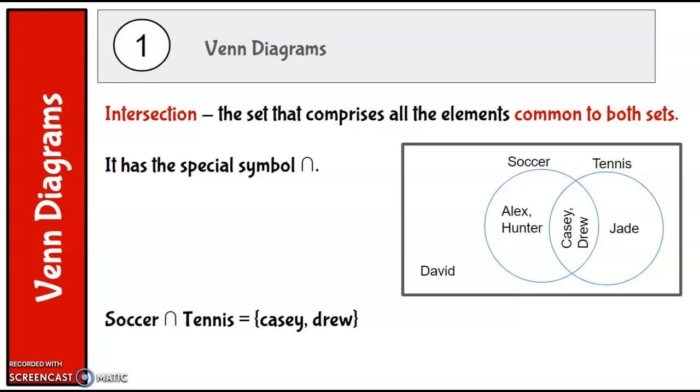So the intersection of soccer and tennis is Casey and Drew, because those two people play both soccer and tennis. And you can see that from the overlap of these two circles. This whole circle is soccer and this whole circle is tennis.